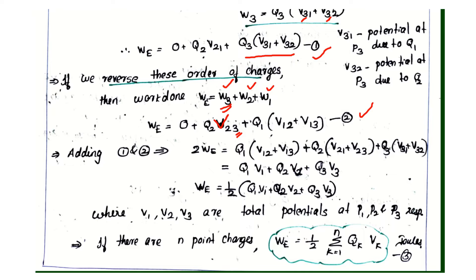Now, V12 plus V13 is the total potential V1 at point P1 due to Q2 and Q3. Similarly for V2 and V3. So 2WE equals Q1·V1 plus Q2·V2 plus Q3·V3, giving WE equals one-half times (Q1·V1 plus Q2·V2 plus Q3·V3).